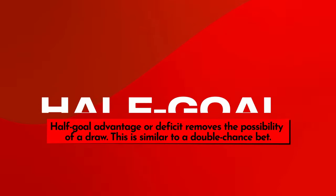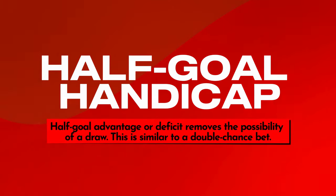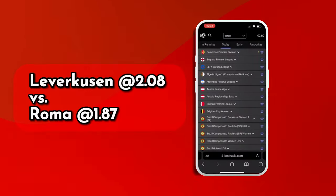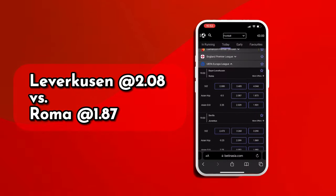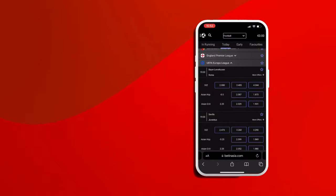0.5 Handicap, half goal: with a half goal advantage or deficit, there will always be a clear winner as the possibility of a draw is eliminated. This is similar to a double chance bet. Example: Leverkusen at odds 2.08 versus Roma at odds 1.87.